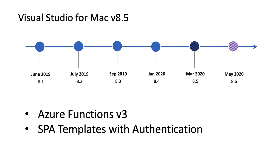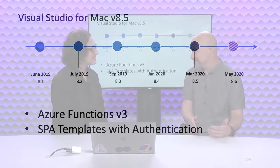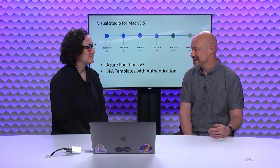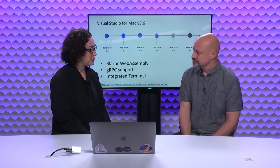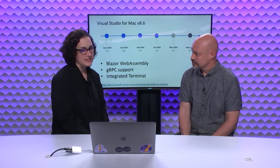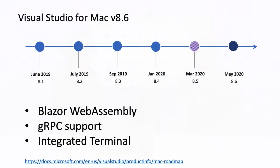In 8.5, we added support for Azure Functions V3, as well as SPA templates with support for authentication built in. 8.5 is in preview now, and we're already using the previews. Then we've got 8.6 coming in May — we're excited about it. In that release, we'll support Blazor for WebAssembly and gRPC, which is popular for microservices architectures today. We'll also support an integrated terminal, which really comes back to the theme that we want to make sure developers don't have to do context switching to other windows or other applications. The idea of a cockpit-style IDE is that you have everything you need right there in the application.